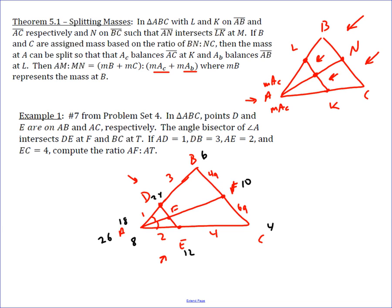So now we can go through and find the ratios inside. We're just looking for AF to AT. If A has a mass of 26,